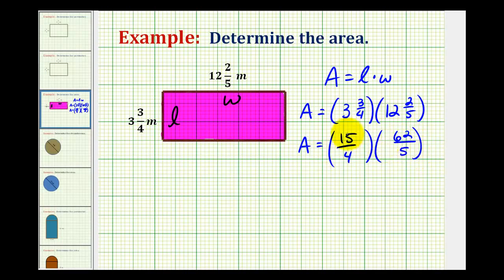Before we multiply, we should try to simplify. Since fifteen and five have a common factor of five, I'll rewrite fifteen as three times five. And since four and sixty-two have a common factor of two, I'll rewrite four as two times two, and sixty-two as two times thirty-one. This makes it very easy to identify the common factors. Five over five simplifies to one, and two over two simplifies to one.